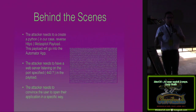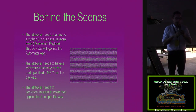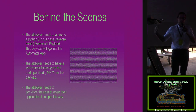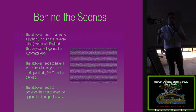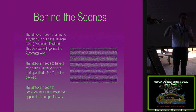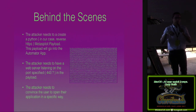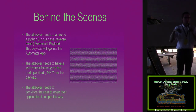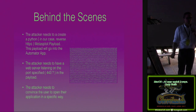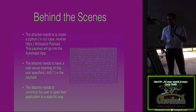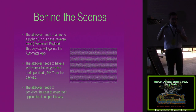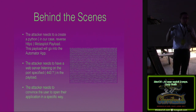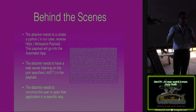Behind the scenes, the attacker creates a payload that's reverse HTTPS, encoded in base64. We dump that into Automator, and you can add some fun tasks around it — I've added notifications at the top and bottom saying the application started or 'thank you for using the application.' I like to use the same exact server that the person downloaded the application from, because if you're looking at logs, it makes sense — it looks like an update.